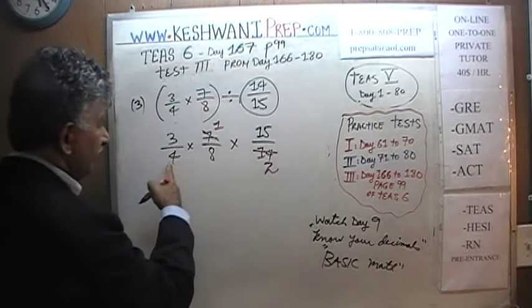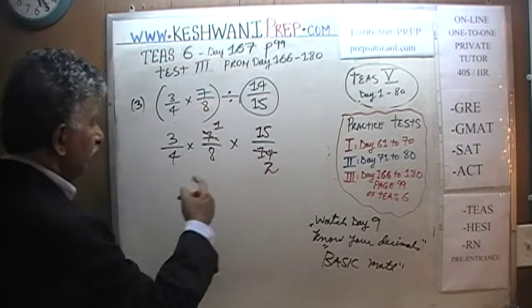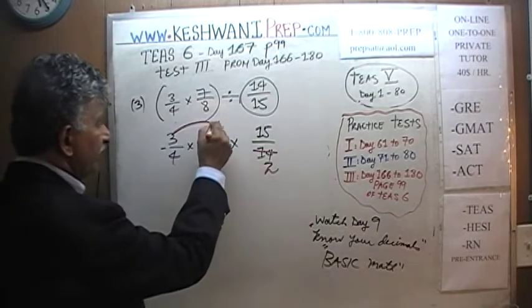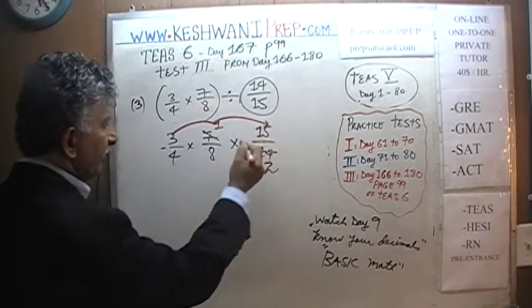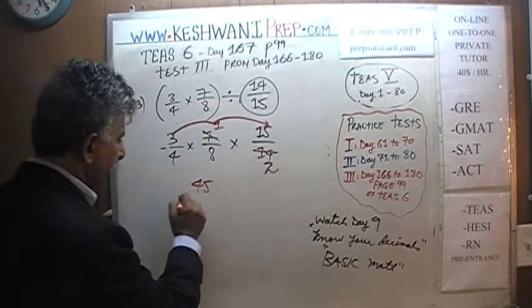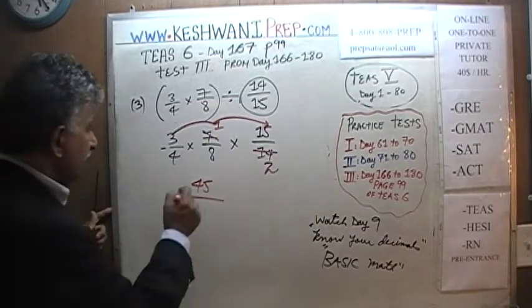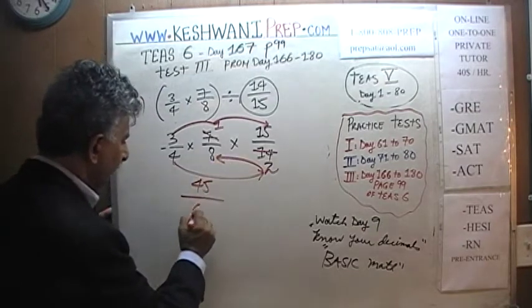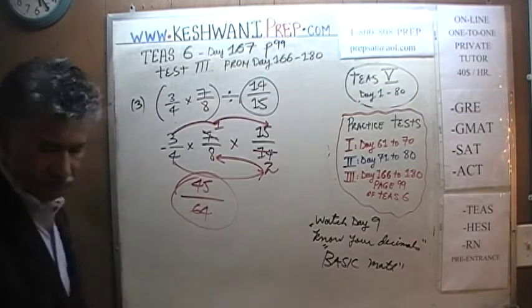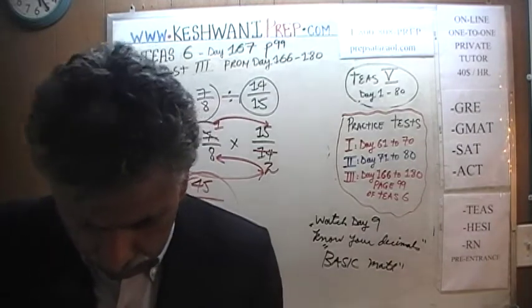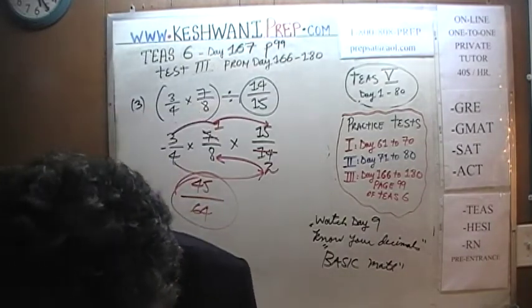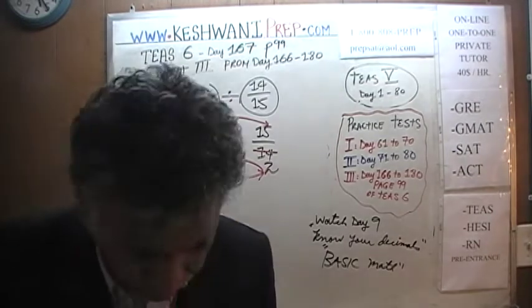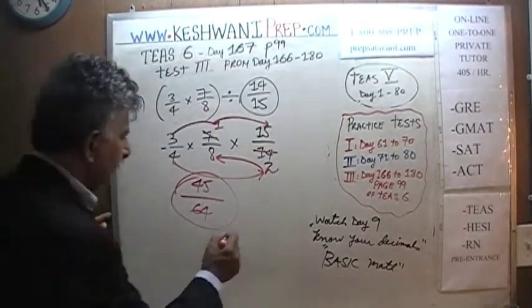Because 3 and 15 have nothing in common with 4, 8, and 2, we now multiply. 3 times 1 times 15 gives us 45 on top. On the bottom, 4 times 2 is 8, and 8 times 8 is 64. So the answer is 45 over 64 — that's answer choice C.